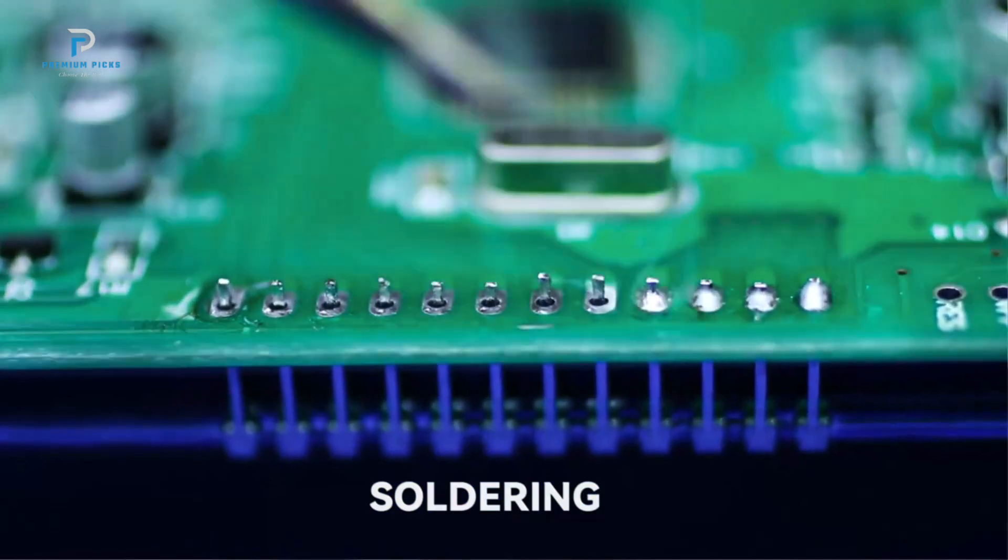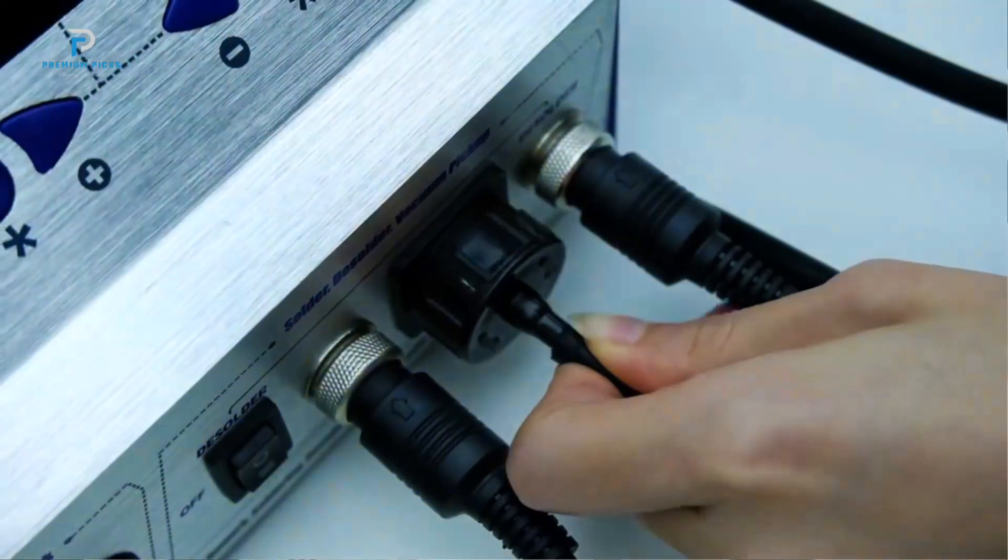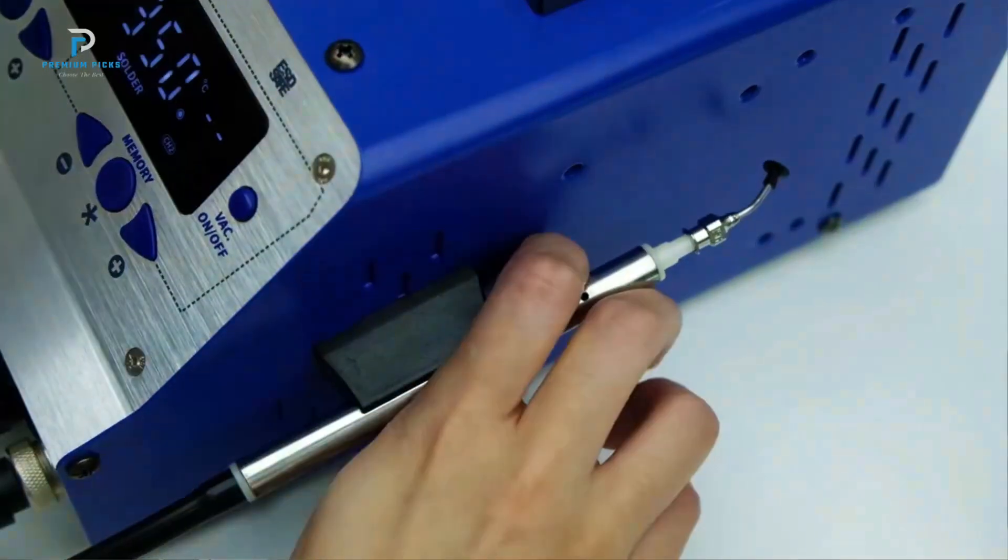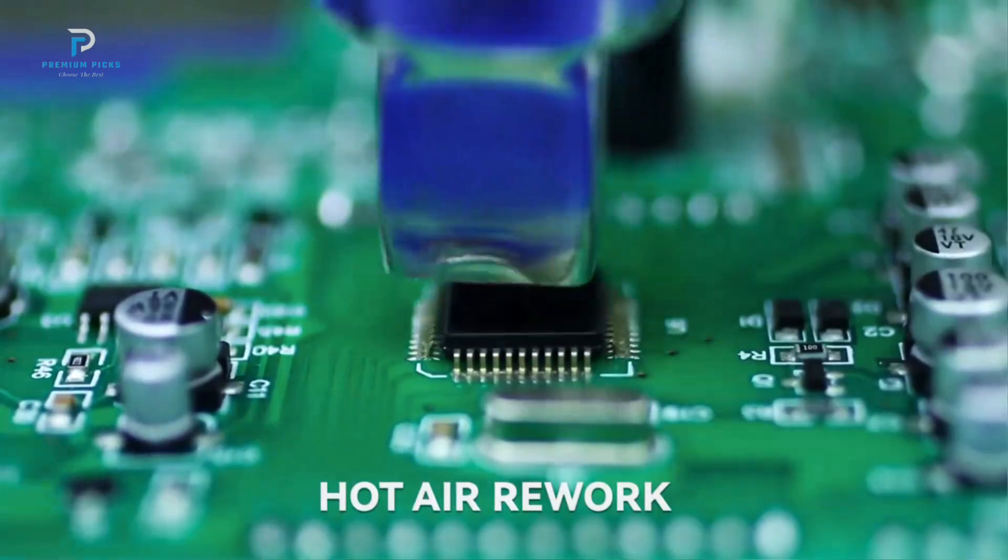With 780W of power, the Yehua 948-2 offers a wide temperature range on both the hot air gun (100 to 480 degrees Celsius) and soldering iron, allowing you to tackle a range of applications.